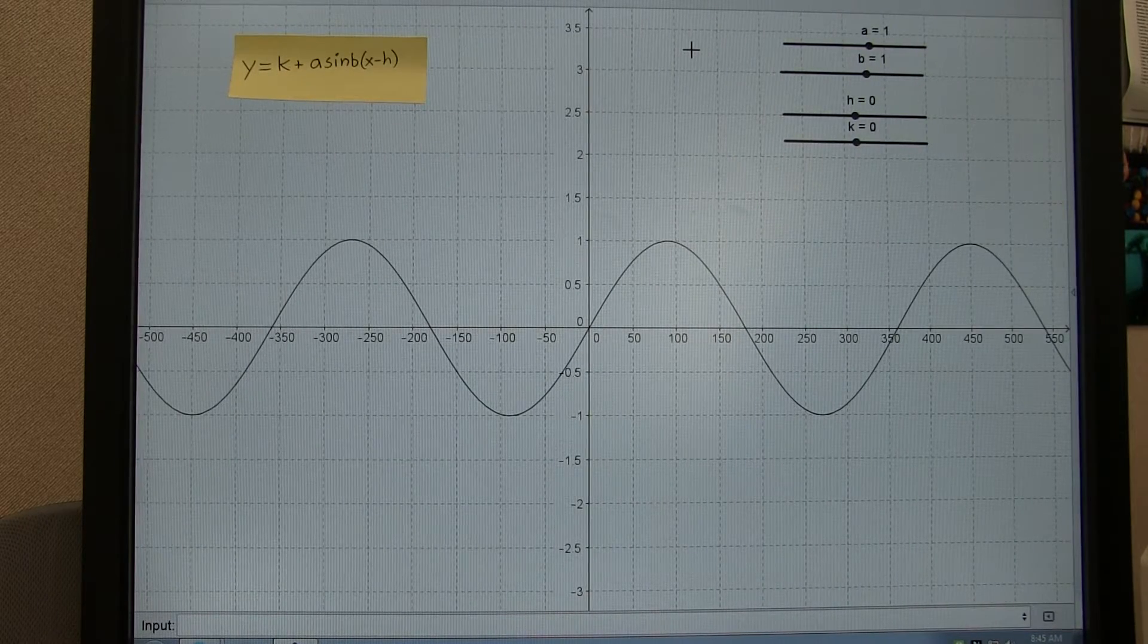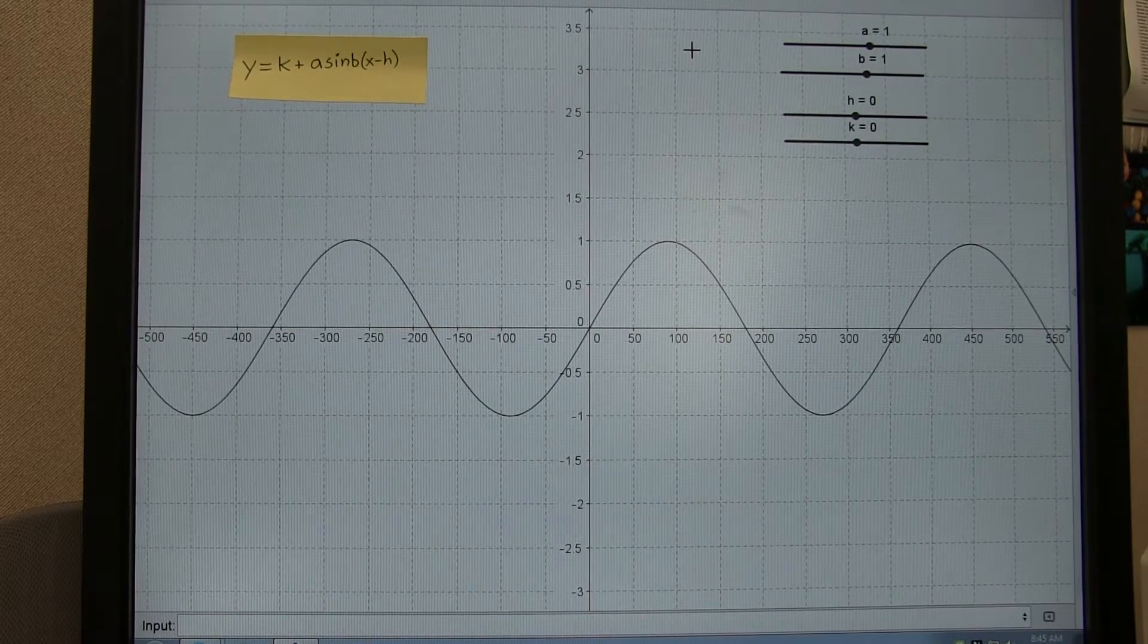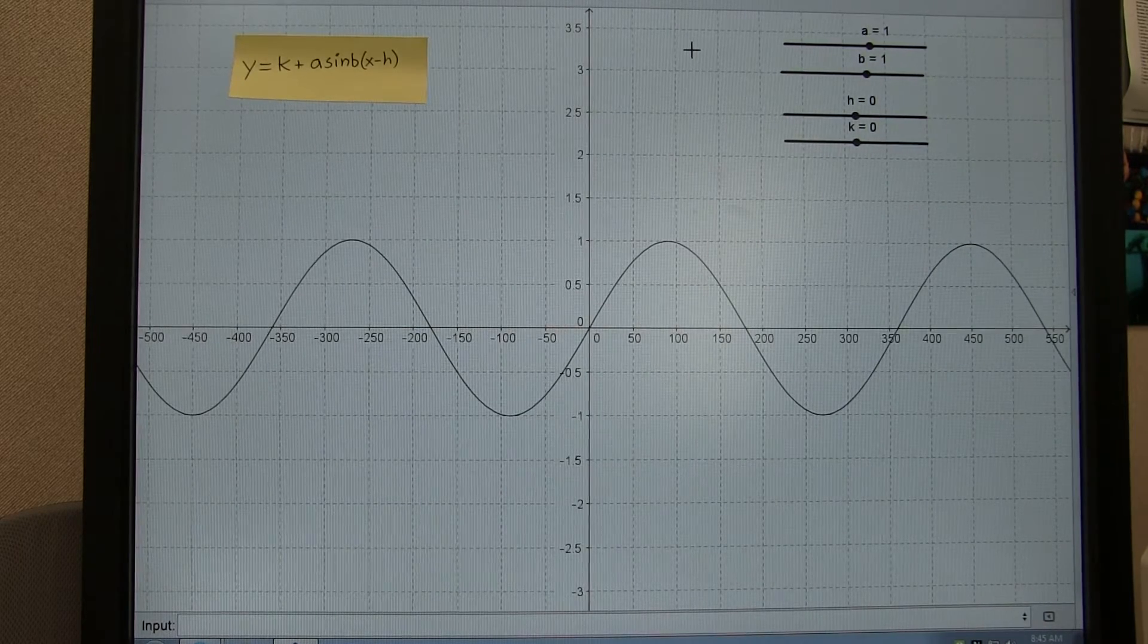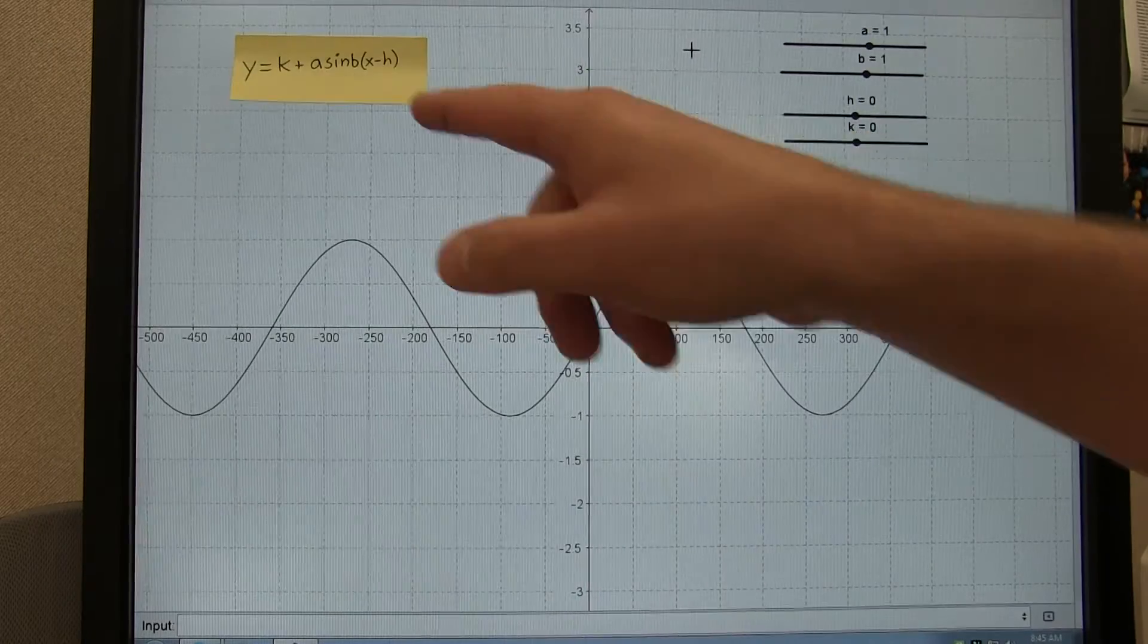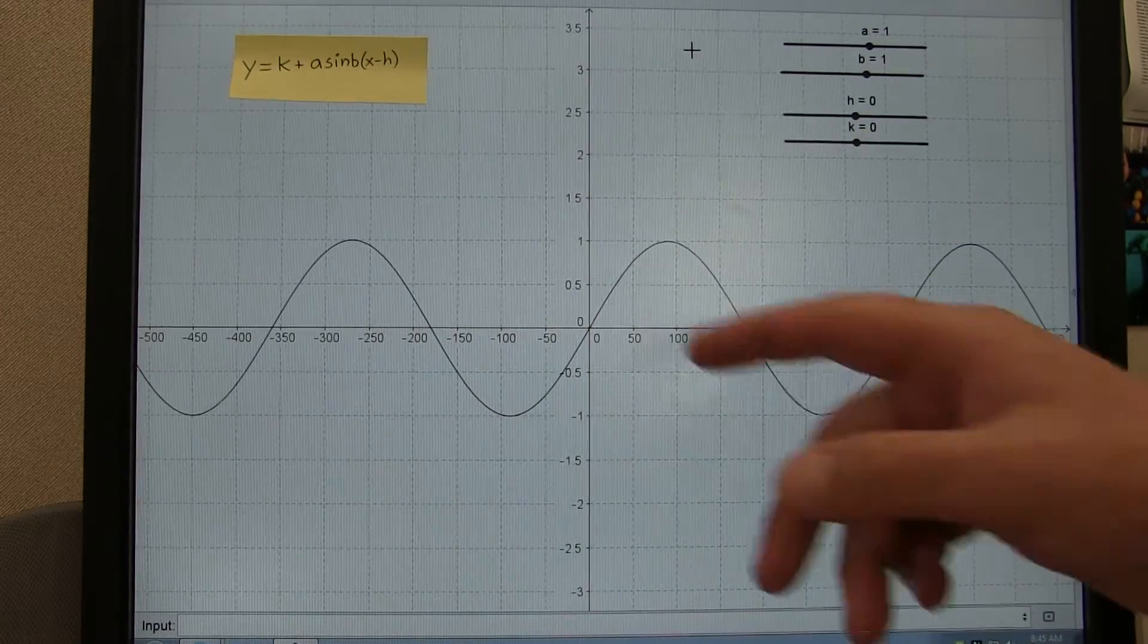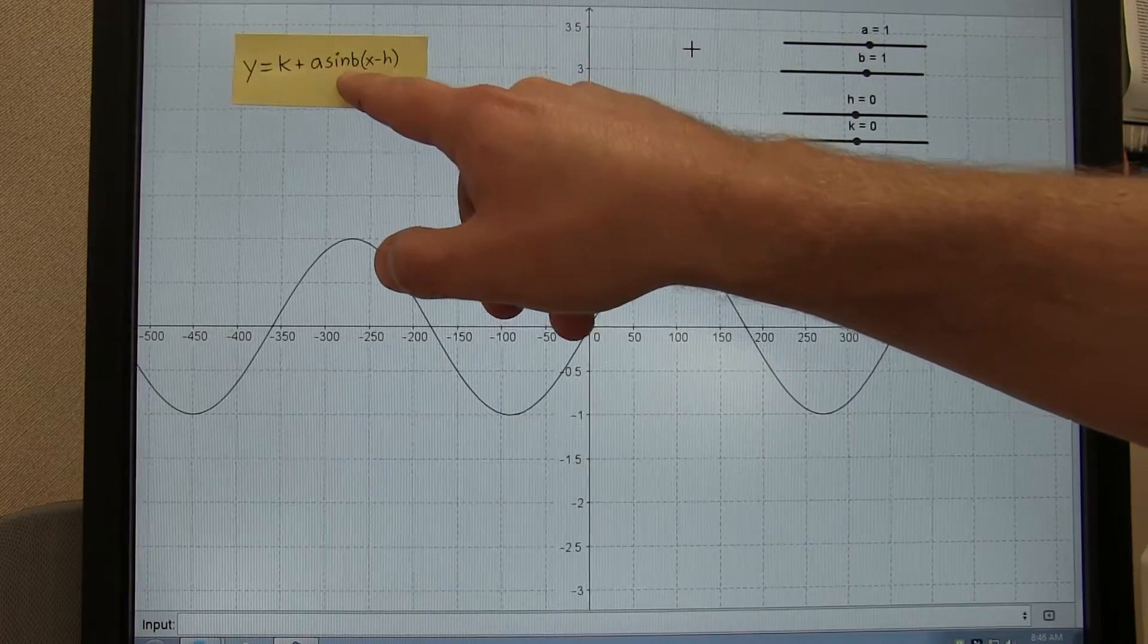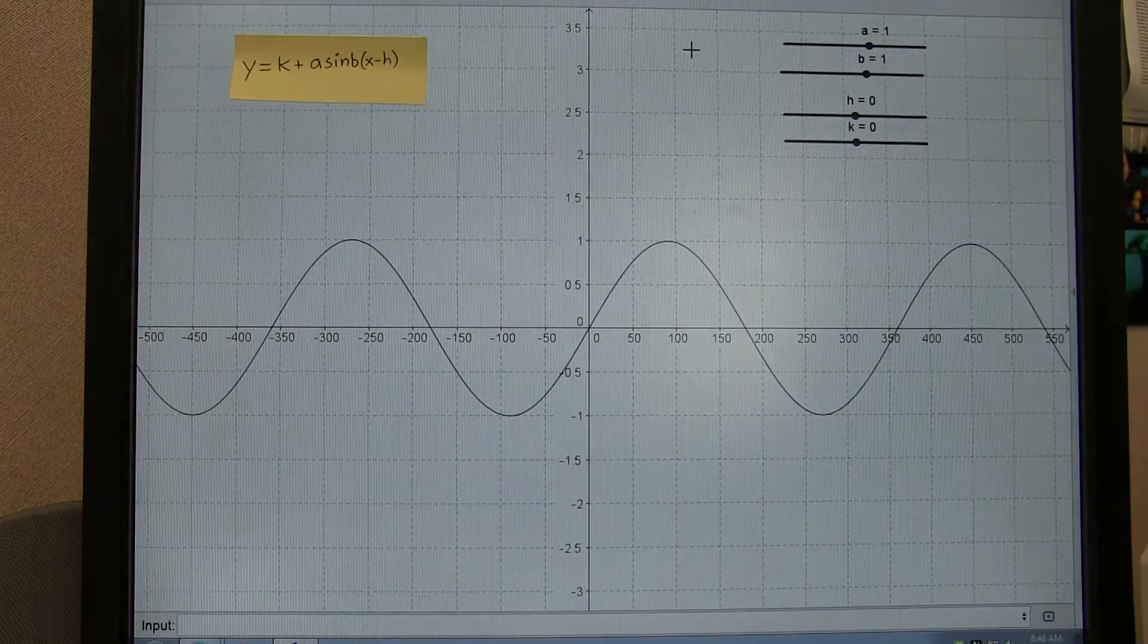Today we're going to use GeoGebra to graph some more complicated trigonometric functions involving sine. Here's a standard form of the sine function with four parameters of interest: a constant k, a coefficient a, a coefficient b, and some constant h.